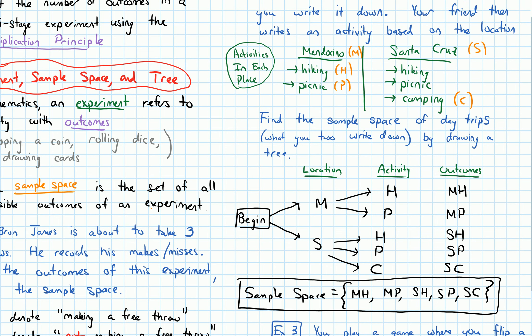In fact, if we tried to multiply something like two for two locations by three because there's three total activities, we would get two times three is six. But we actually have one, two, three, four, five outcomes.